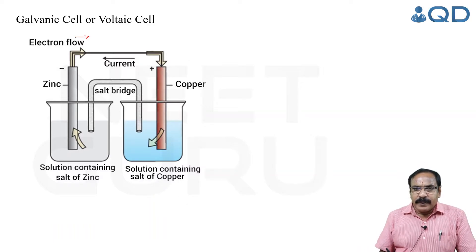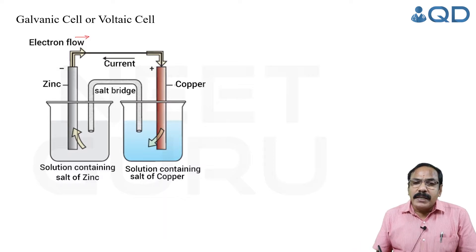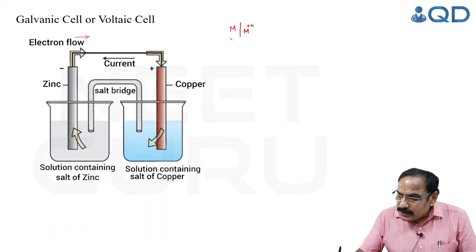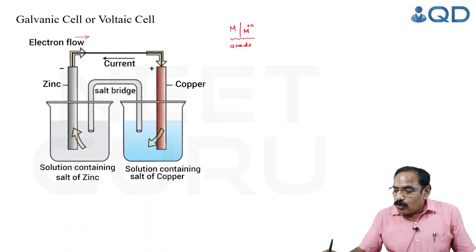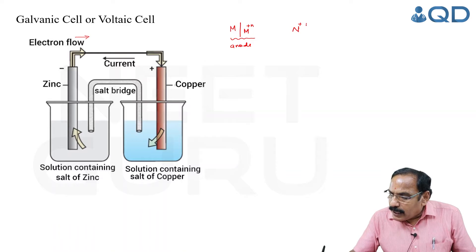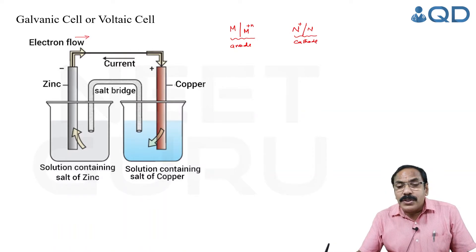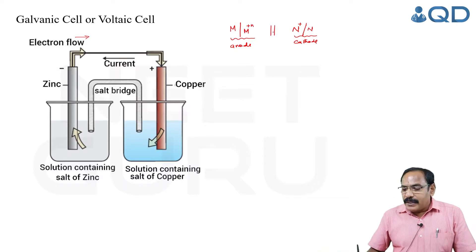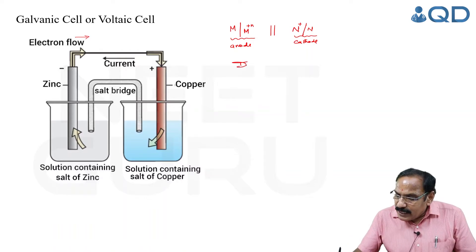A galvanic cell is represented by IUPAC rules: the anode is represented as metal | metal ion — this is the anodic half cell, always kept on the left. The cathodic half cell is represented as metal ion | metal. The two solutions are internally connected through a salt bridge, represented by a double vertical line.